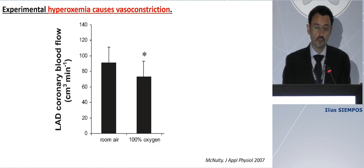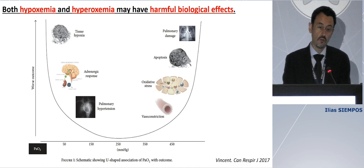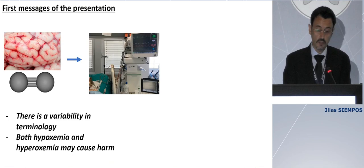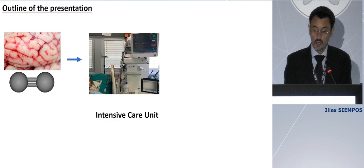So hyperoxemia may cause vasoconstriction in the brain and secondary brain injury. If we take them together, both hypoxemia and hyperoxemia may have harmful biological effects. This is a classical figure in a review manuscript written by Drs. Vensan and Takone. So the first messages of my presentation are: there is variability in terminology, and both hypoxemia and hyperoxemia may cause harm.